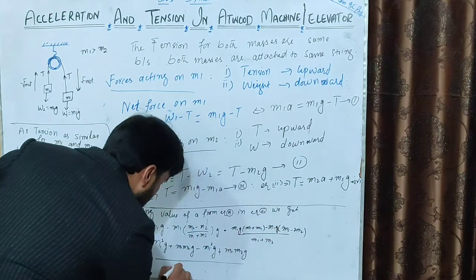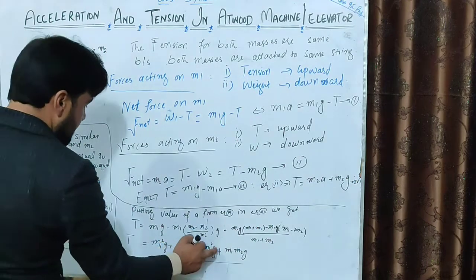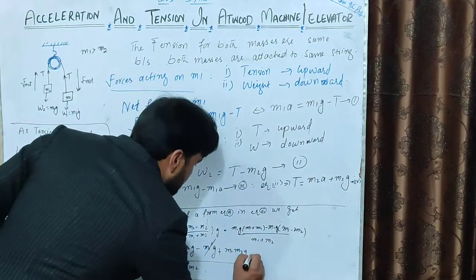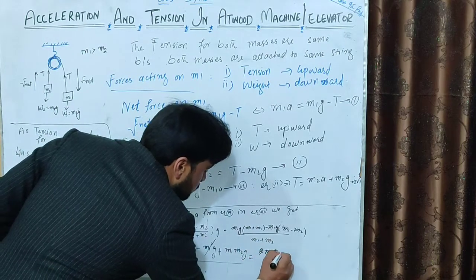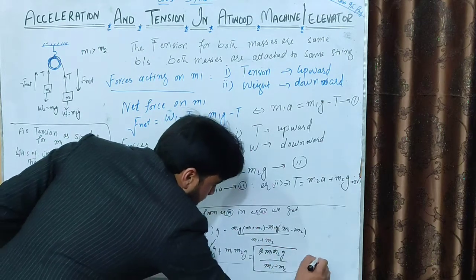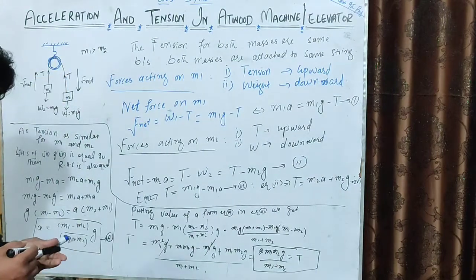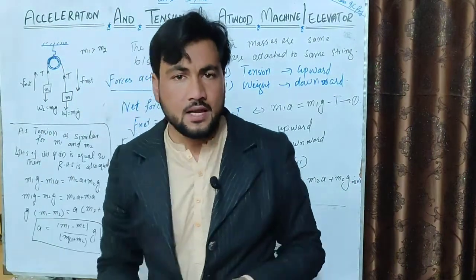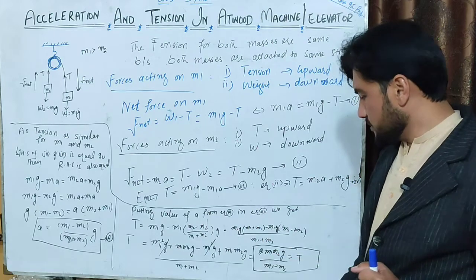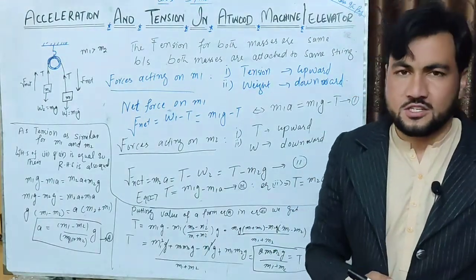After simplification, the m1²g terms cancel out, and we are left with the tension value: T = 2m1m2g / (m1 + m2). This is the tension in the string of the Atwood machine, which also gives us the strength of the cable required in an elevator with masses m1 and m2.